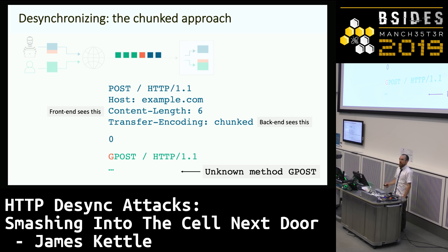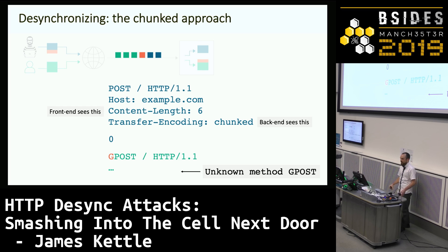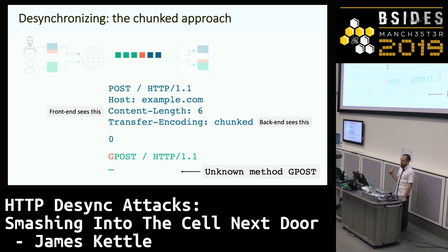What does work on plenty of interesting systems is using chunked encoding. Chunked encoding is an alternative to using Content-Length, whereby instead of specifying the length of the message up front, the server is expected to parse the body until it reaches a zero followed by an empty line. The frontend here is looking at the Content-Length and forwarding the blue and orange data, while the backend thinks this message is chunked — it reads in the blue data, sees the zero followed by a newline, stops parsing, and once again the victim gets a message saying something like 'unknown method GPOST.' The key difference is that this technique actually works on plenty of real systems.